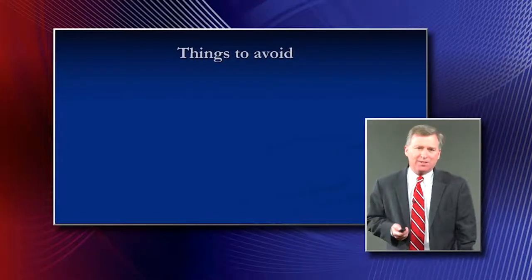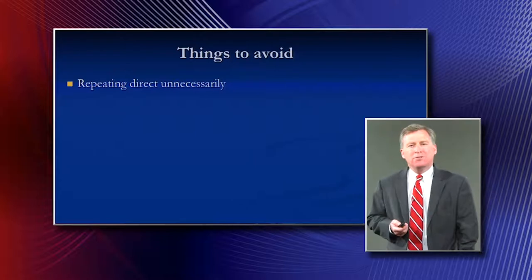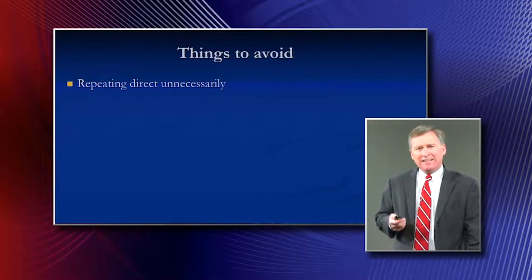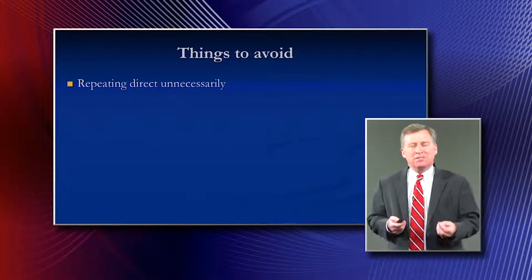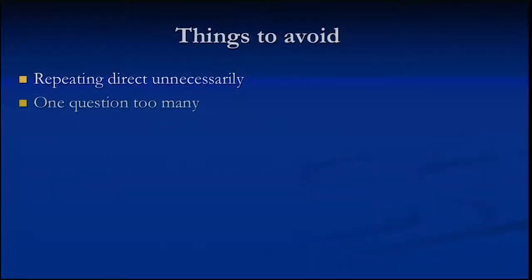Certain things you want to avoid in cross-examination. Don't repeat the direct unnecessarily — that's a mistake many of us make because when we start off we're nervous, so it's easy to say 'didn't you just say this?' The problem is that if we didn't like that testimony the first time, why repeat it and have the fact finder hear it again? Another mistake is asking that one question too many. That goes back to the point about crossing with an eye toward closing: get the ammunition you need and don't go too far.